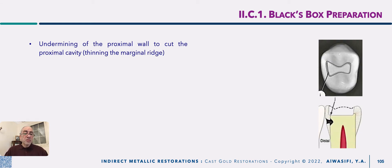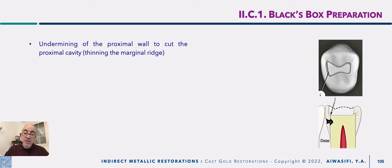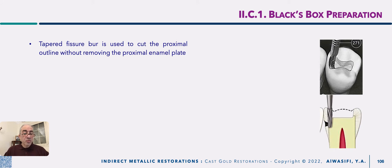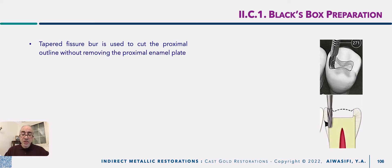Then, to the other side to include our caries and prepare the proximal box, you are in need for undermining of the proximal wall — cutting the proximal cavity of the other side by thinning the marginal ridge and widening the extension buccolingually to ensure that your buccal and lingual walls of the proximal box will be located in a self-cleanable area, which is the embrasures. Then comes the role of the tapered fissure bur to cut the proximal outline deeper, to go deeper to create a gingival seat and to create the axial wall, without removing the proximal enamel plate.